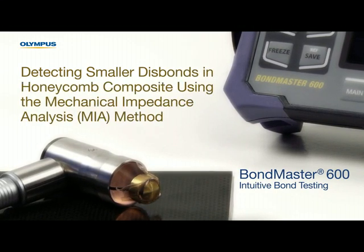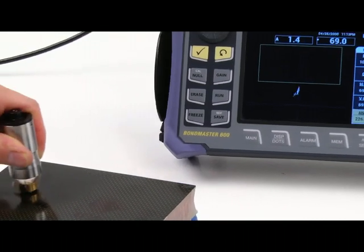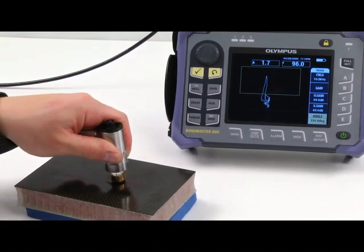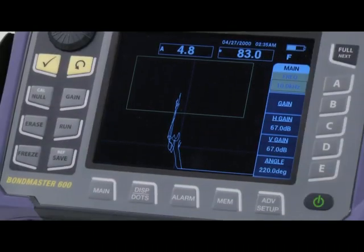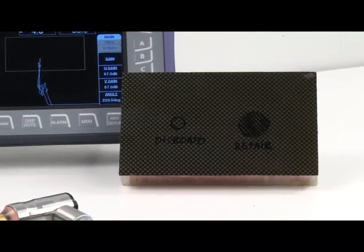Welcome to this instructional video on the Bondmaster 600 bond tester. This video illustrates how to use the Bondmaster 600 tester in mechanical impedance analysis or MIA test mode to detect smaller disbonds in honeycomb composite.